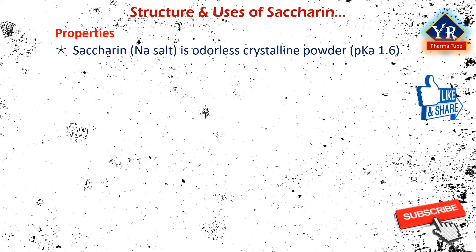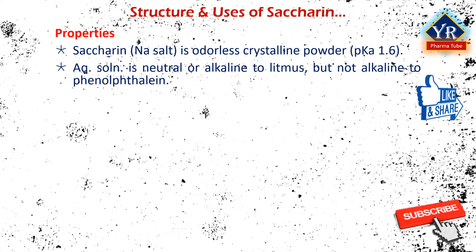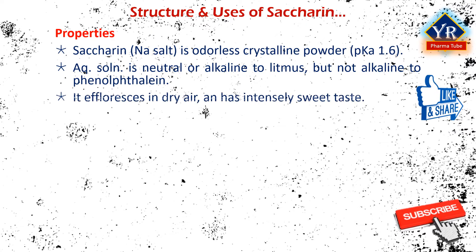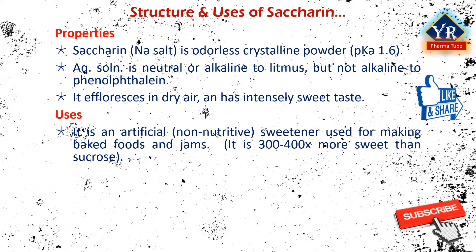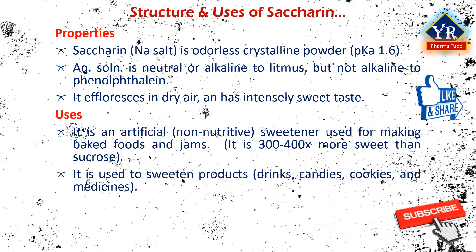Saccharine sodium salt appears as odorless white crystals or crystalline powder. The free acid of saccharine has a low pKa of 1.6. Aqueous solution is neutral or alkaline to litmus but not alkaline to phenolphthalein. It is heat stable, does not react chemically with other food ingredients, and stores well. It effloresces in dry air and has an intensely sweet taste. Saccharine is an artificial or non-nutritive sweetener used in the production of various foods and pharmaceutical products including baked foods. It is about 300–400 times as sweet as sucrose but has a bitter or metallic aftertaste, especially at high concentrations. It is used to sweeten products such as drinks, candies, cookies and medicines.